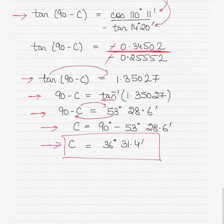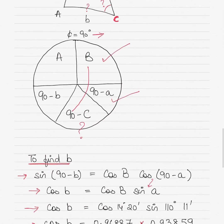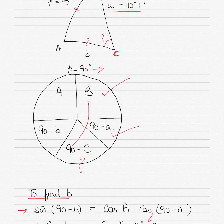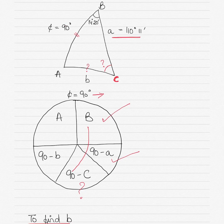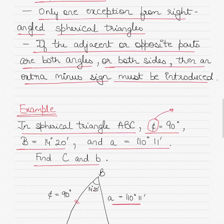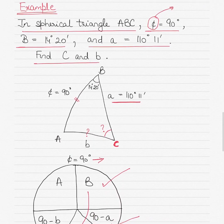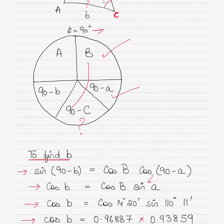This is how you solve a quadrantal triangle — a spherical triangle where a side is 90 degrees. If you ever face a situation where a side is 90 degrees when solving great circle or composite great circle problems, use the quadrantal triangle method. The only exception is: if both terms on the right-hand side of the equation are angles or both are sides, introduce an extra negative sign.